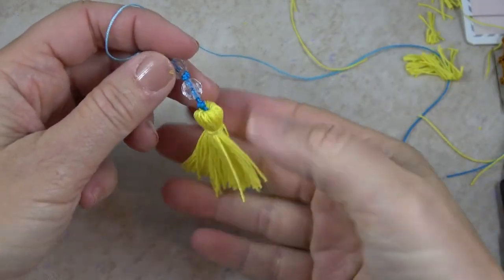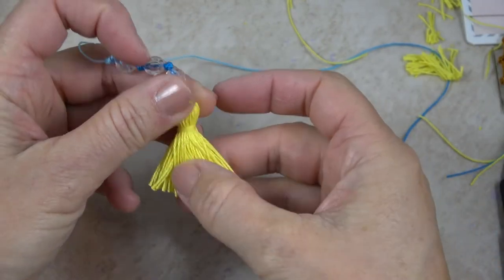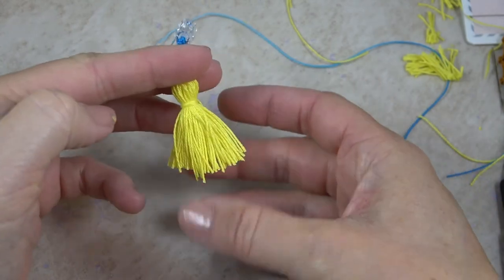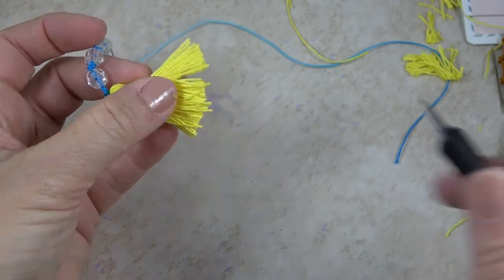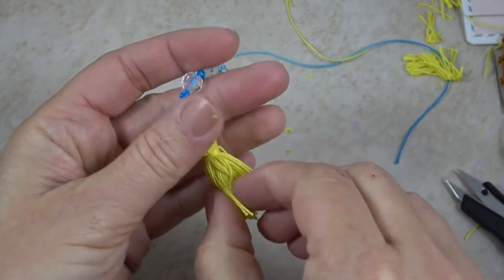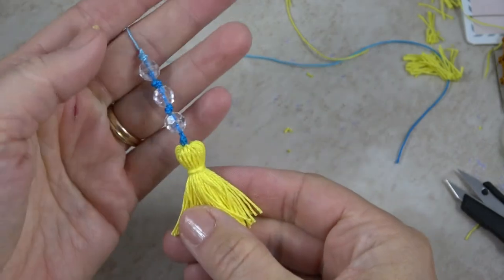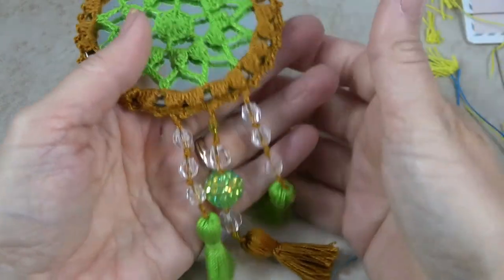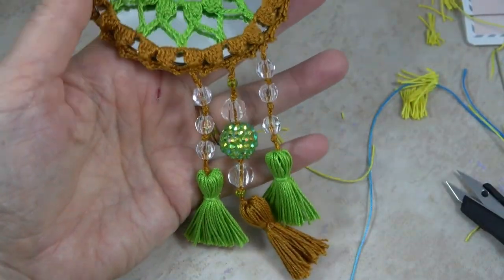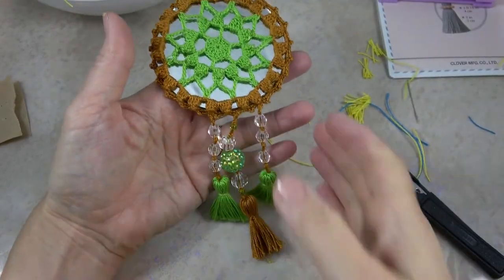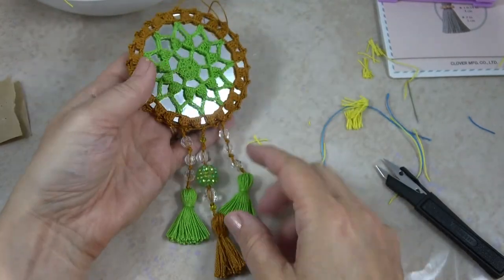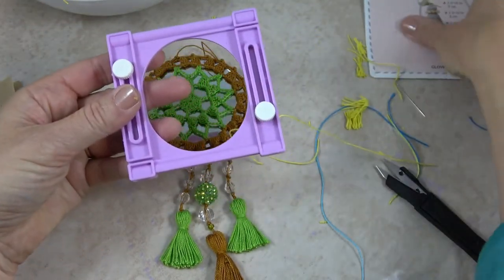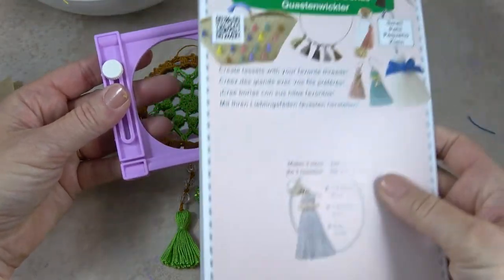And there you have it, a little tassel made with Clover's Small Tassel Maker. And I'll attach that to my Fairy Garden Mandala so it looks something like this. And you have some nice embellishments. So I highly recommend this gadget if you would like to make nice, uniform, pretty tassels.